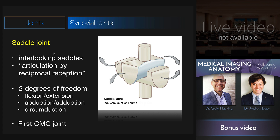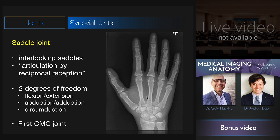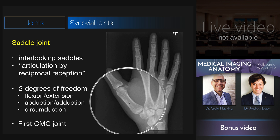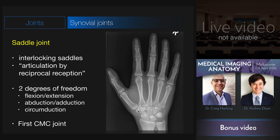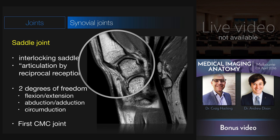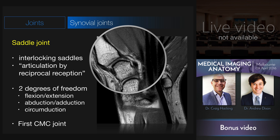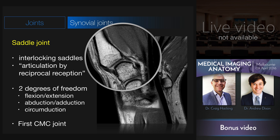The saddle joint allows the same types of movements as a condyloid joint, but does so with interlocking saddles articulating by reciprocal reception. Saddle joints allow flexion and extension, abduction and adduction, and therefore circumduction, but do not allow axial rotation. The first carpometacarpal joint of the thumb is the best example. On x-ray, the base of the first metacarpal has a saddle-like depression for articulating with the trapezium. On MRI, the joint contains a fair bit of fluid with a very thick capsule, consistent with high mobility. This is the joint that allows you to twiddle your thumbs.